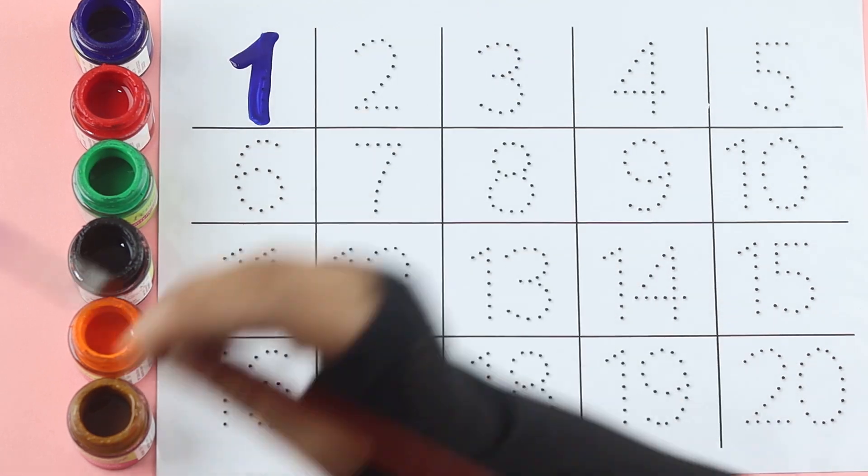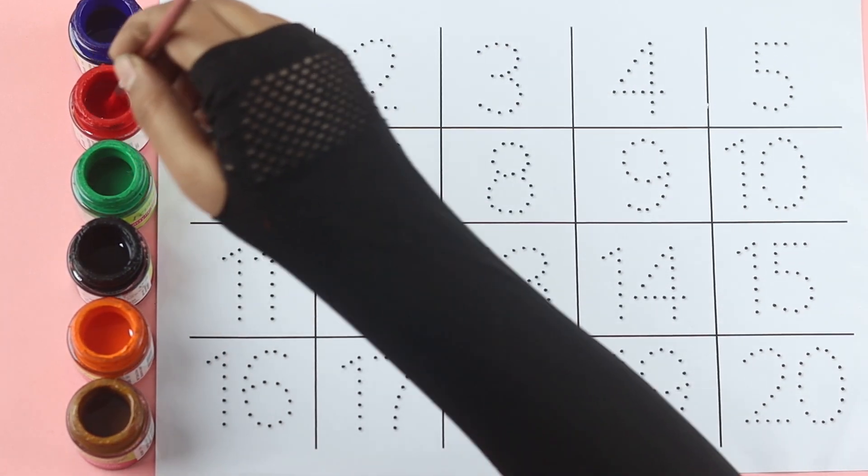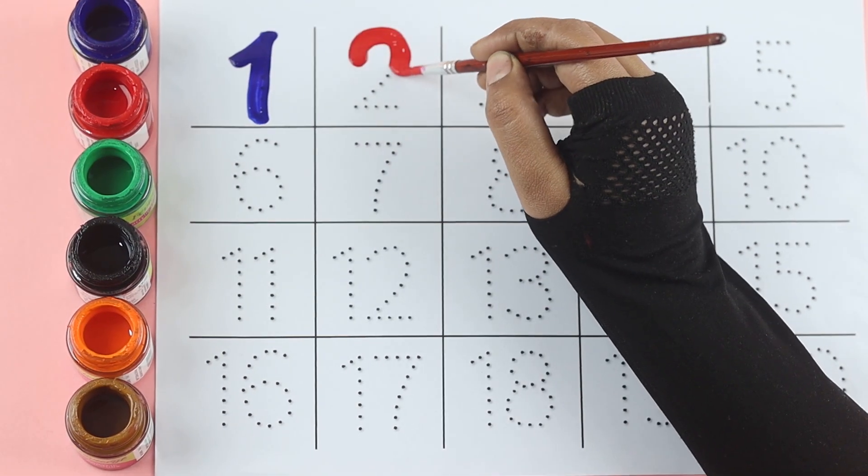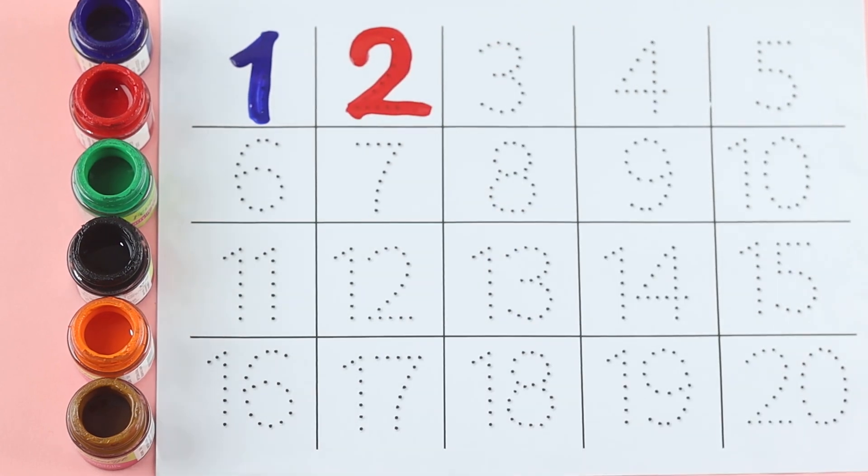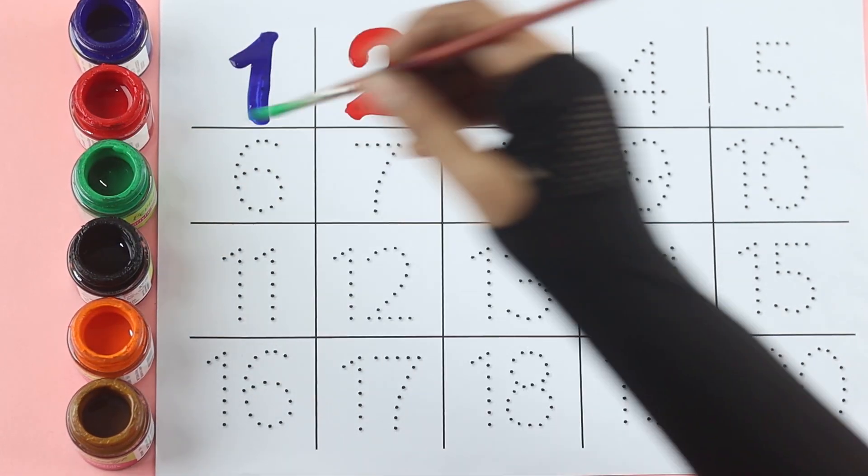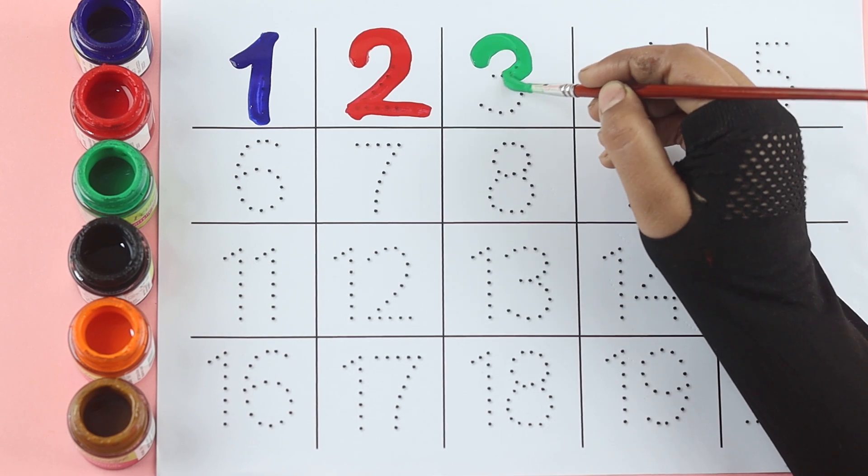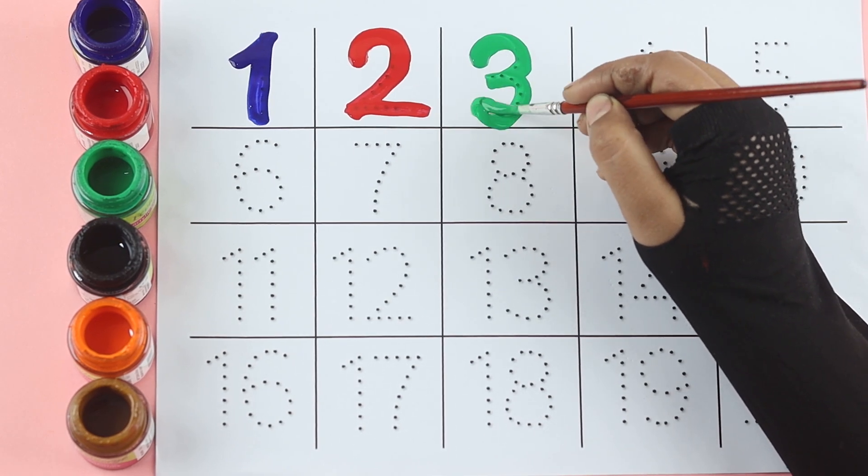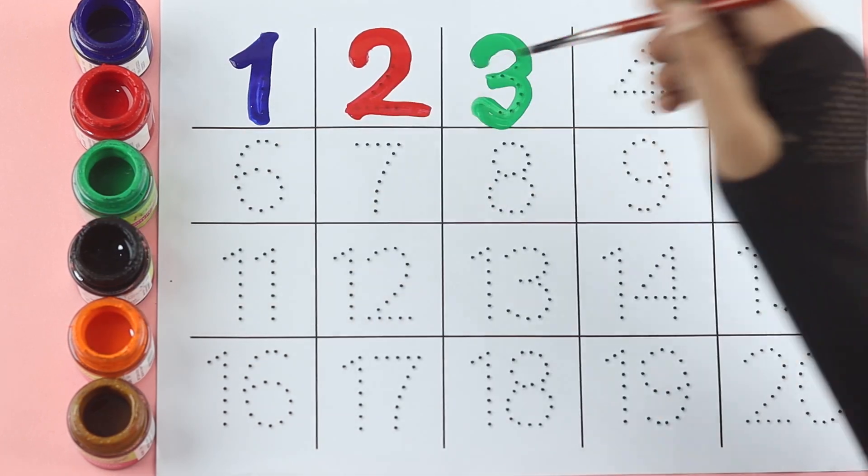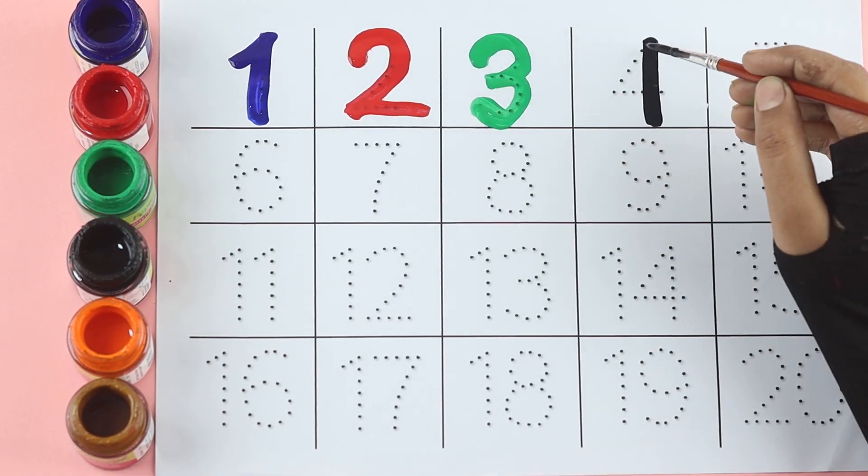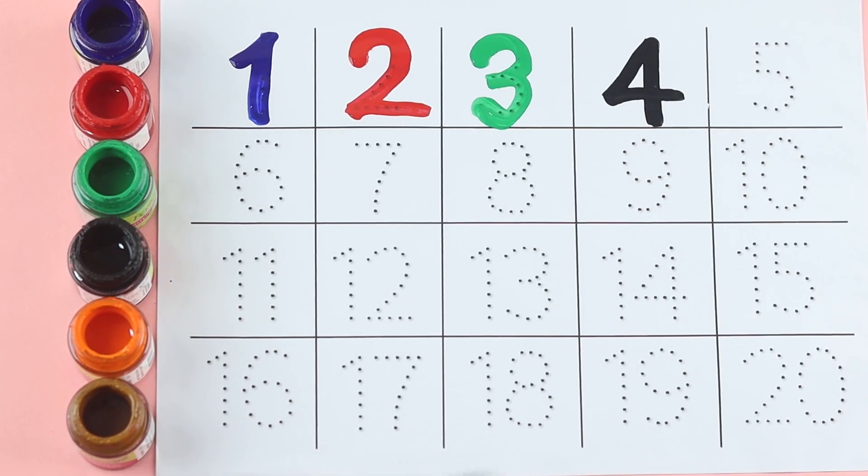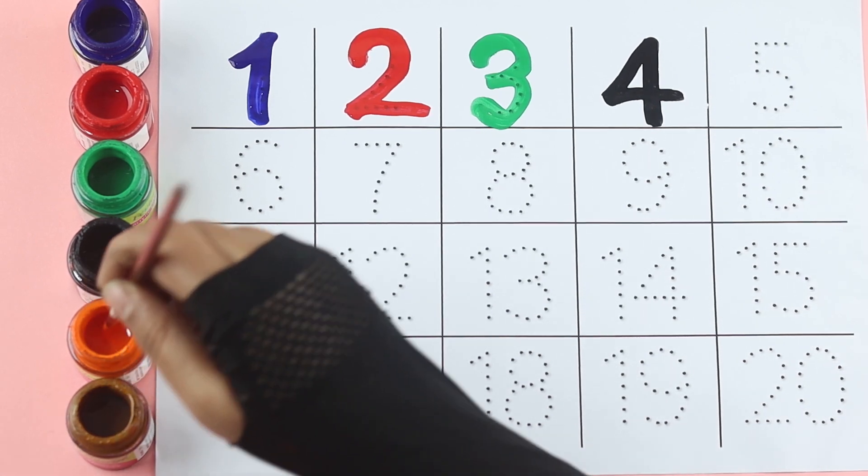One, red color. Two, green color. Three, black color. Four, orange color.